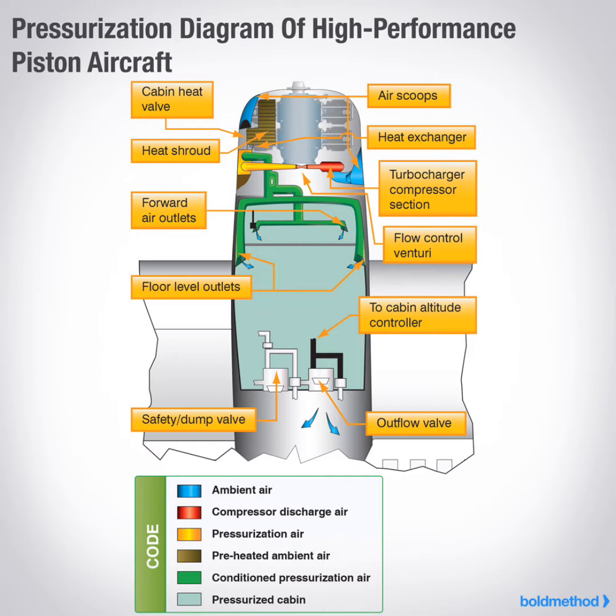What are the components of an air cycle cooling system? Expansion turbine, air-to-air heat exchanger, and various control valves.